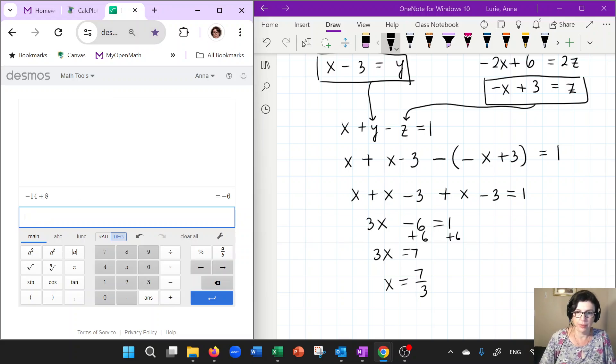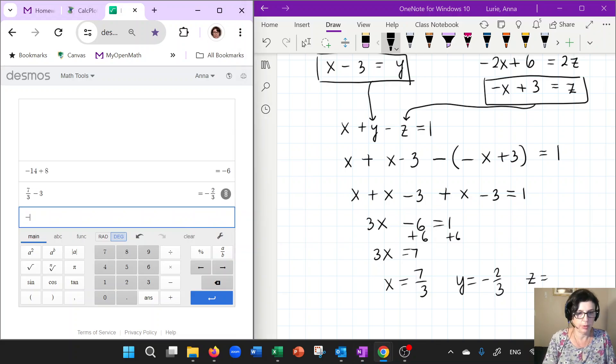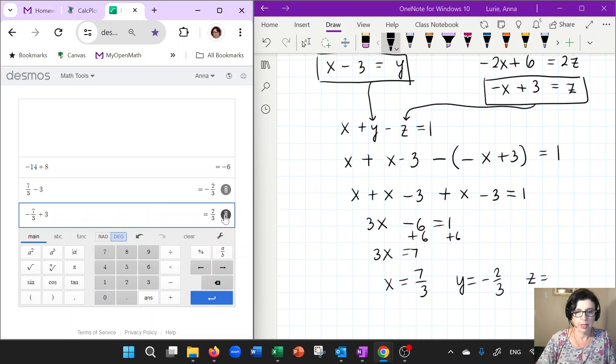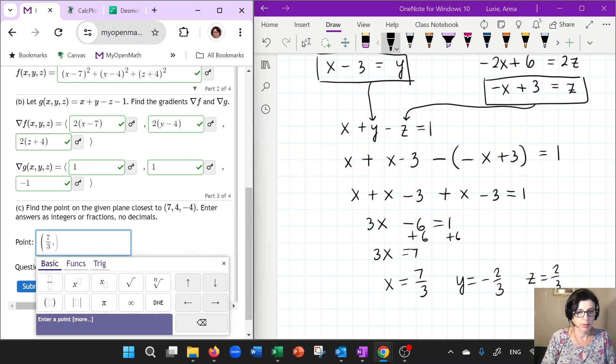Let's see if we can solve that for Y. And so Y would be what? Well, 7 thirds subtract 3. So let's see if we can convert that to a fraction that's negative 2 thirds. And Z is negative X. So if X is 7 thirds, that will be negative 7 thirds plus 3. So that looks like that's 2 thirds. So I hope this is right. But if not, I'm gonna have to start crying right now because it's so much work. So this is the point.